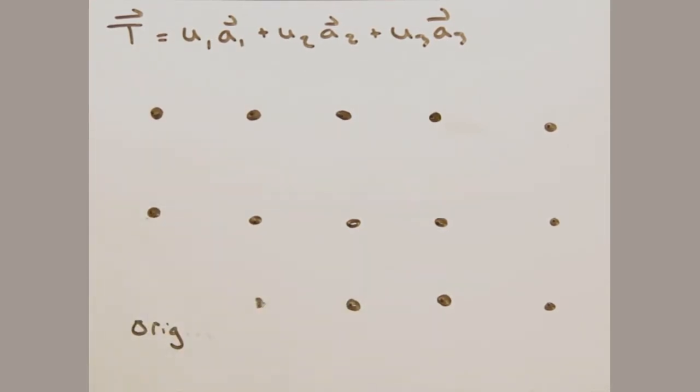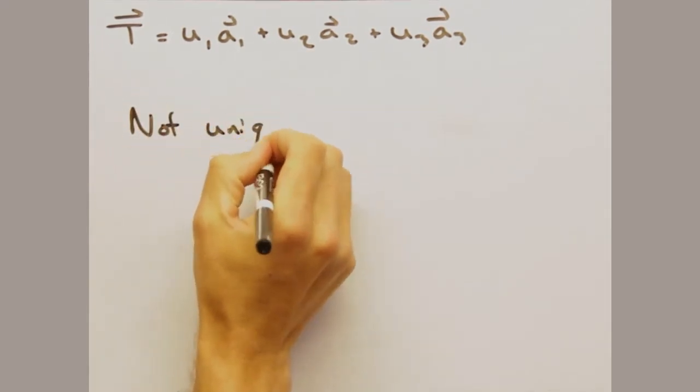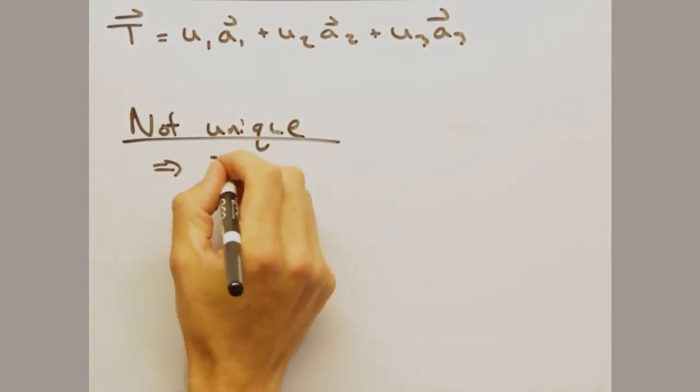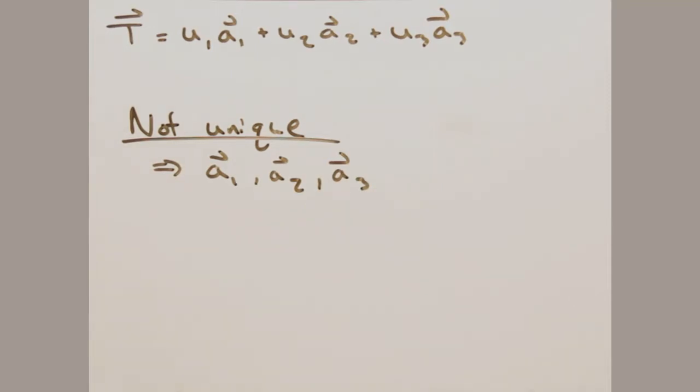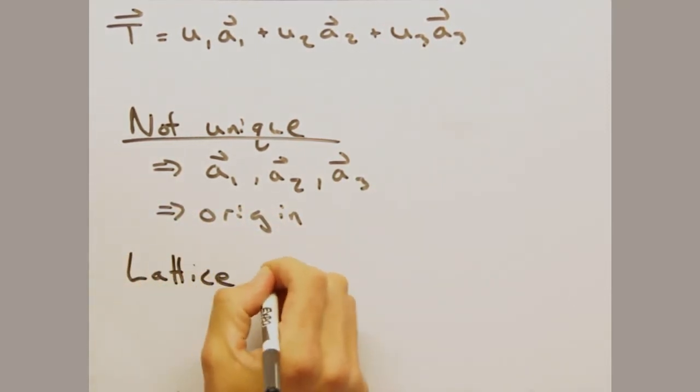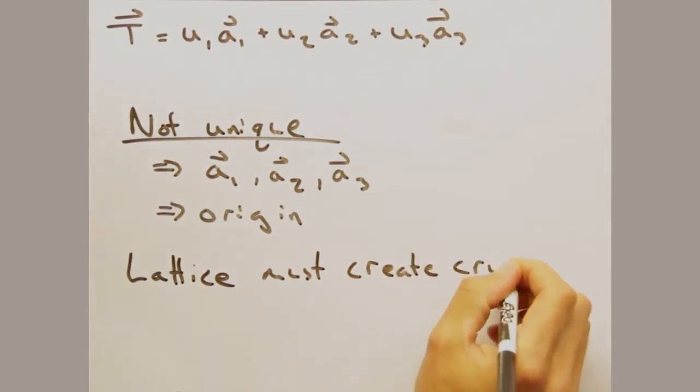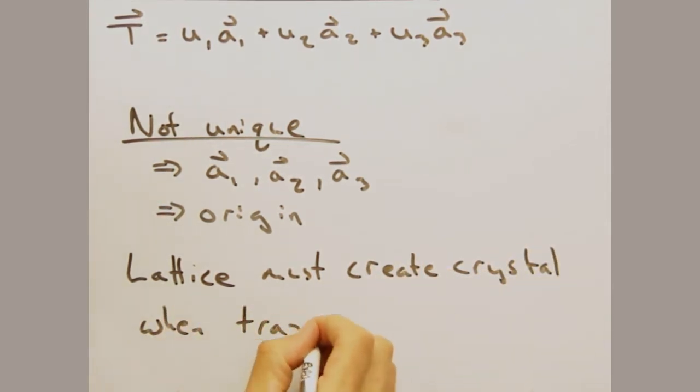Right. Looking at this lattice we've built, it seems like I can choose these vectors for A1 and A2 instead and still be able to recreate all space. So the original A1 and A2 we chose aren't unique? No, they're not. Likewise, we can choose any origin we want. All the lattice has to do is satisfy the constraint that when tiled, it creates the crystal. Since both of our selections do that, they're both perfectly valid.